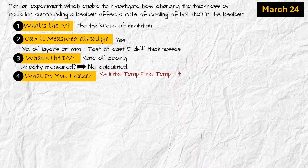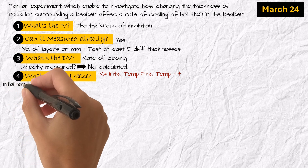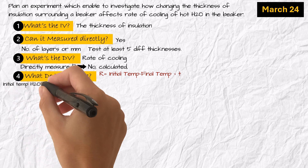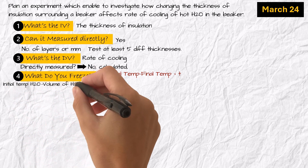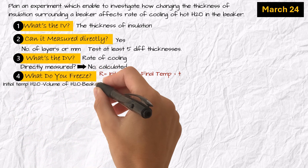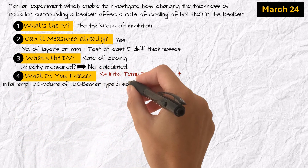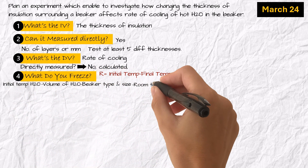Number four: what do you freeze? Write any two from the following: initial temperature of the water, volume of water in the beaker, beaker type and size, room temperature, or lid.